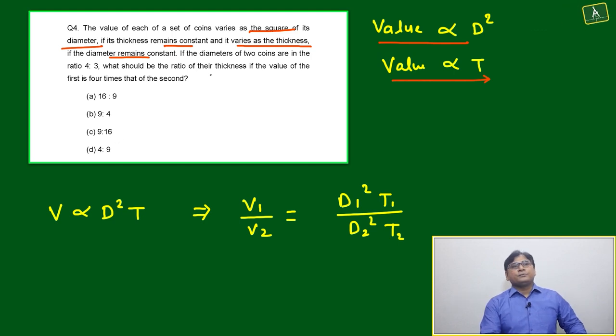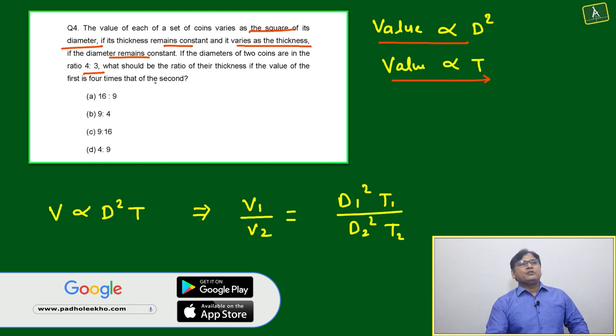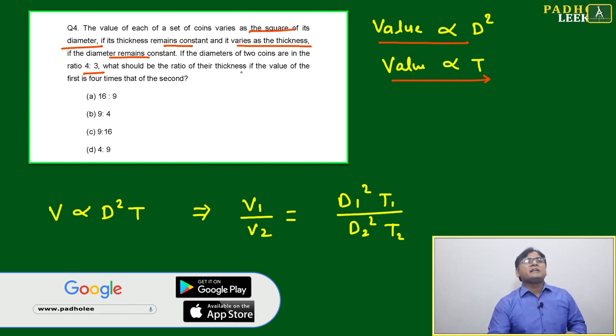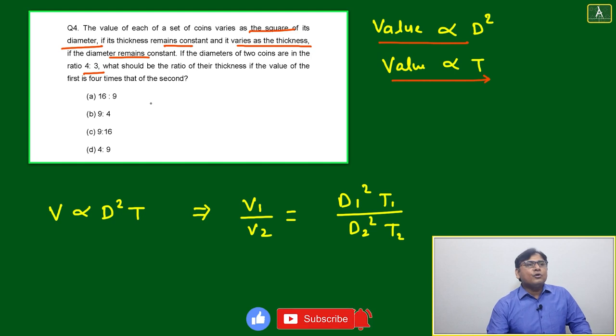If the diameter of two coins are in the ratio 4:3, the diameter ratio is given. Then what should be the ratio of their thickness if the value of the first is four times that of the second?